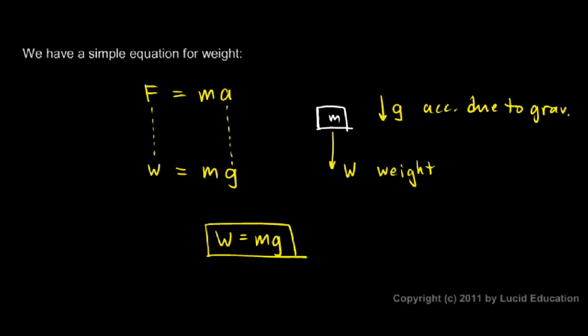The weight of an object is equal to its mass, which would be in kilograms, multiplied by G. And G is a known number. G is 9.8 meters per second squared, if you're on the Earth near the surface.